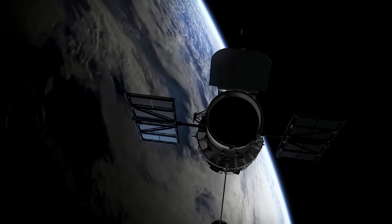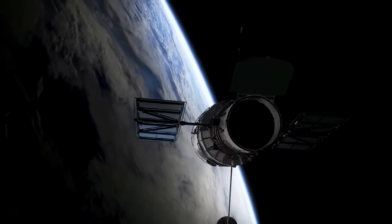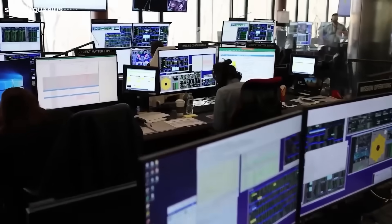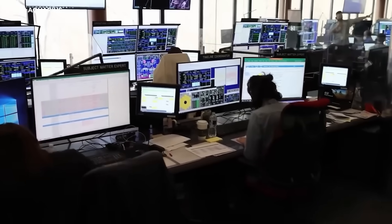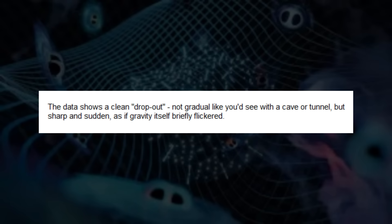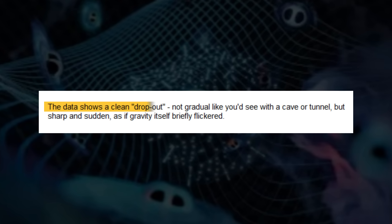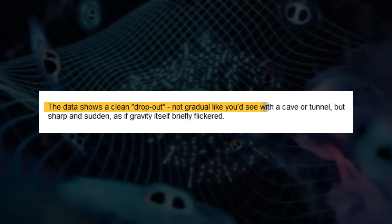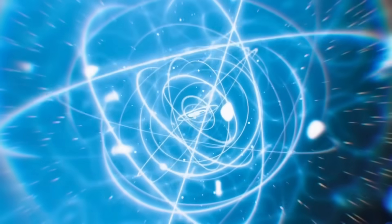Scientists have detected underground tunnels with these sensors before. In 2022, researchers at the University of Birmingham successfully mapped hidden caverns using similar technology. But those readings match their models perfectly. This one doesn't fit anything we know. The data shows a clean dropout. Not gradual like you'd see with a cave or tunnel, but sharp and sudden, as if gravity itself briefly flickered.